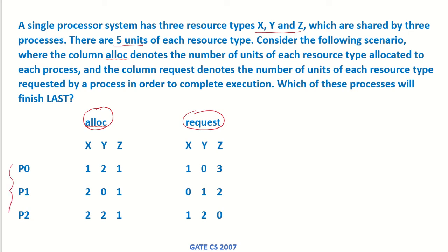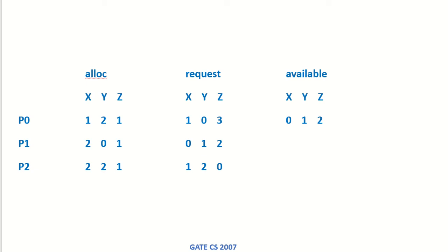Let's say these are the three processes P0, P1, and P2. The current allocation of resources X, Y, and Z to each of the processes is given to us. We know that there are five units of each resource type and what they have requested additionally. There are five of X, five of Y, and five of Z.